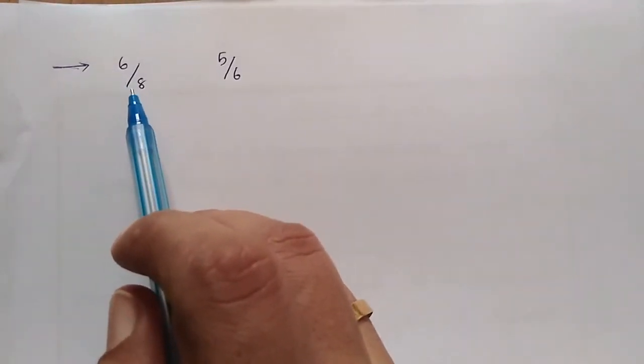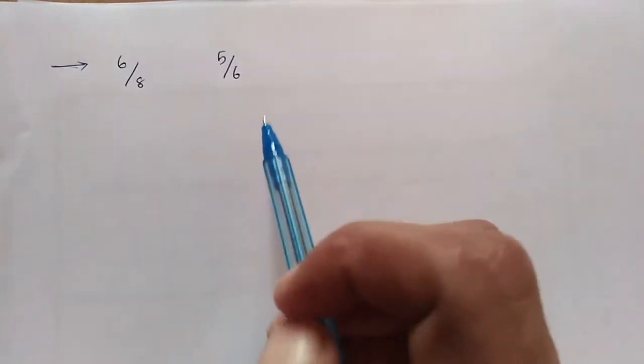Whether 6/8 is largest or 5/6 is largest. This is a shortcut for that. The traditional method is division: 6 divided by 8 and 5 divided by 6. We find the decimal numbers and compare them.